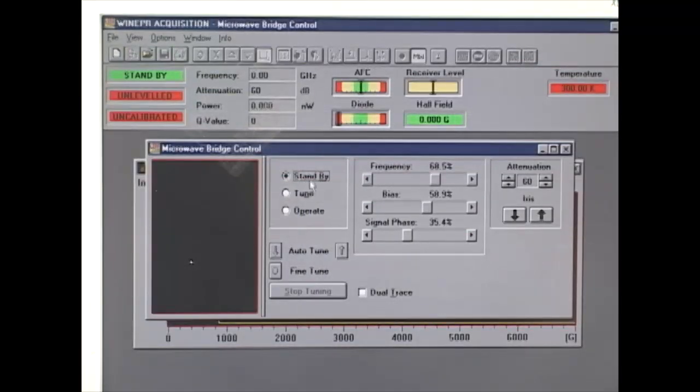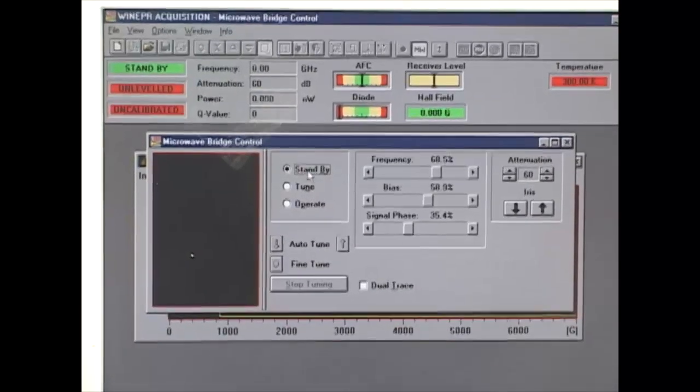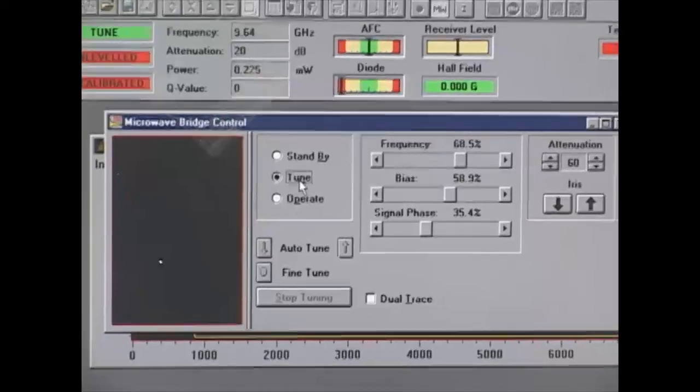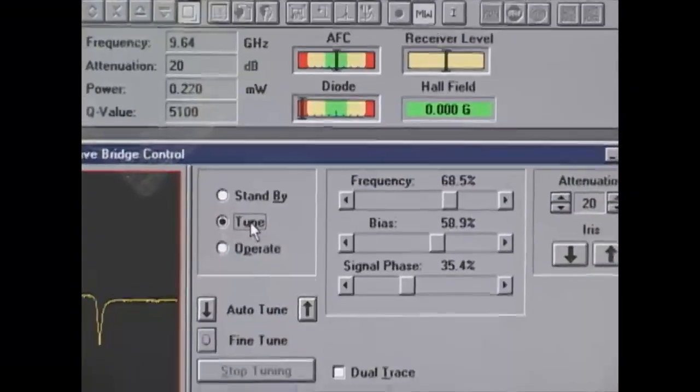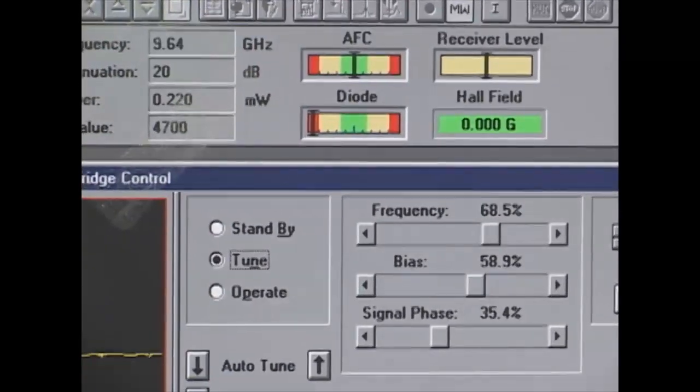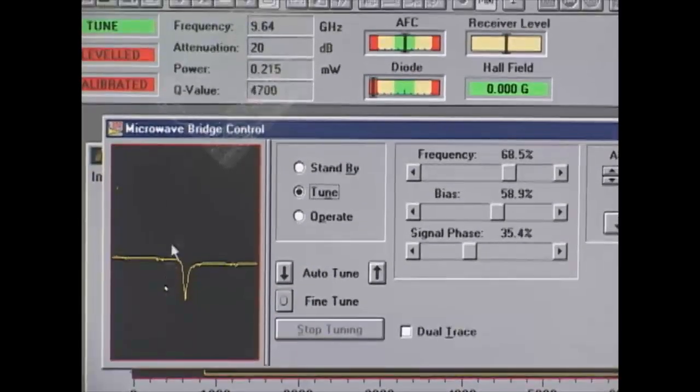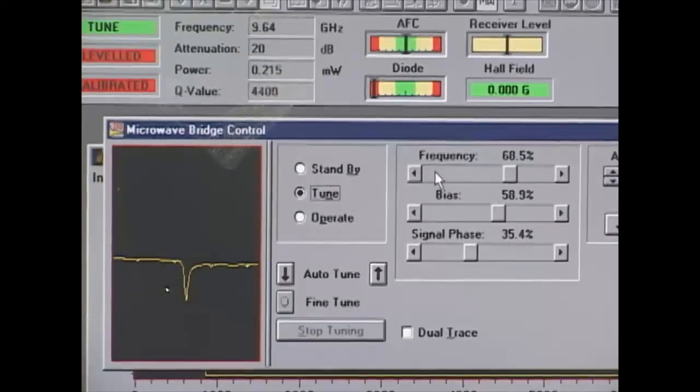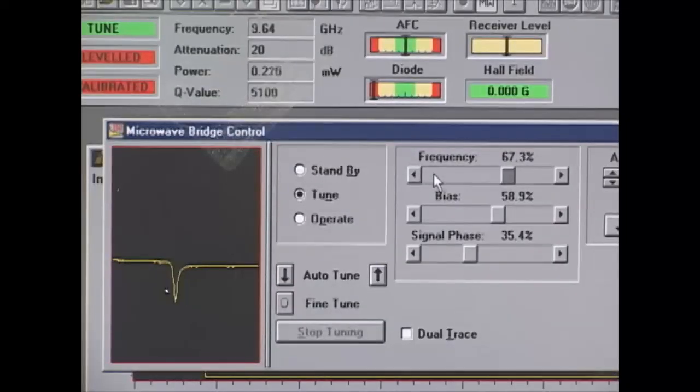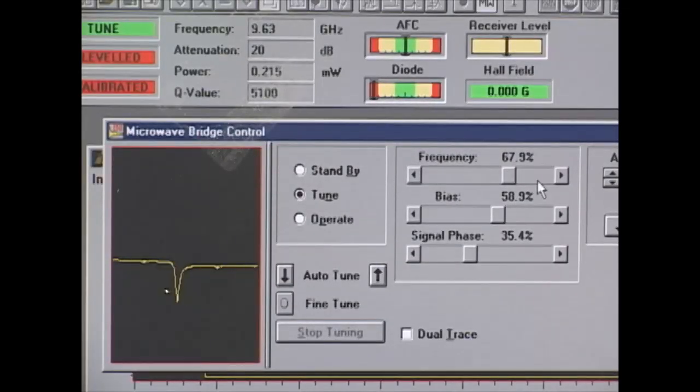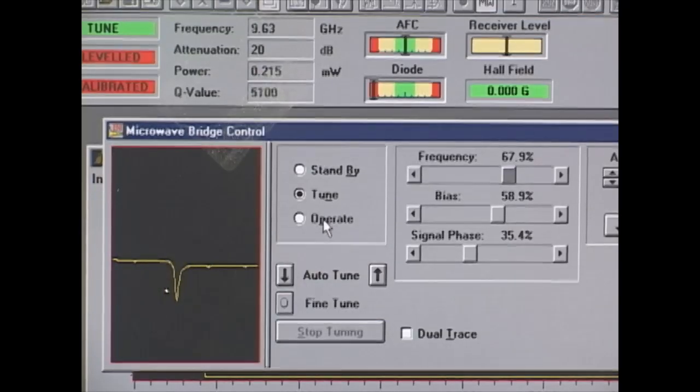From here we can tune our signal. It's in standby, so we go to tune and see our signal in this box. We're trying to get the signal in the center of the box by adjusting the frequency. Once it's in the middle, we go to operate.